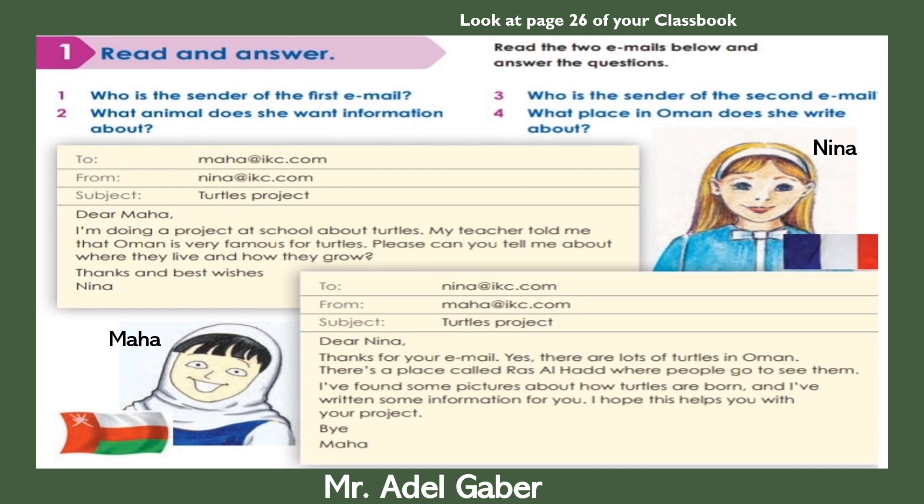Now let's read the four questions. Question one: who is the sender of the first email? Two: what animal does she want information about? Three: who is the sender of the second email? Four: what place in Oman does she write about? Now read the two emails and find the answers to these four questions.